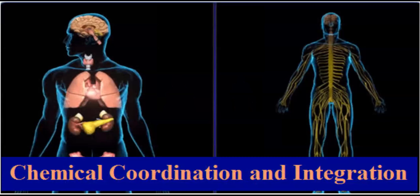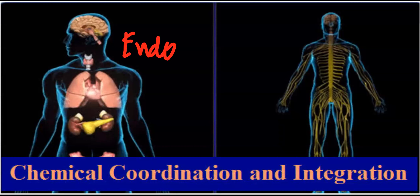Let me introduce Chapter 22: Chemical Coordination and Integration. In our body, two systems take care of integration of body activities. So many things happen — movement, locomotion, digestion, excretion, respiration, etc. — and there has to be some central control and commanding center. The two systems are the endocrine system and the nervous system.